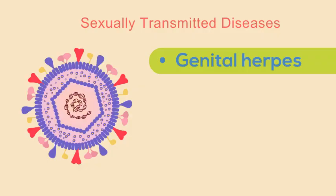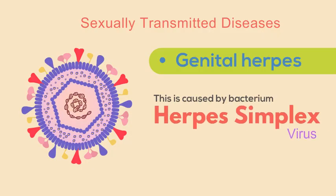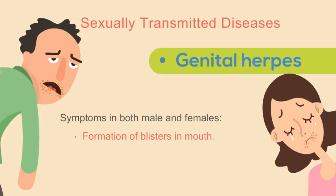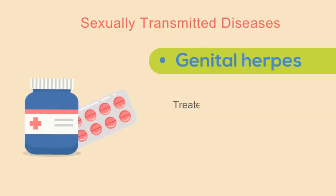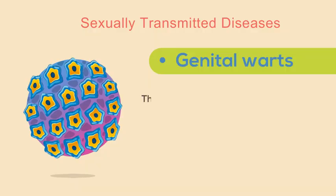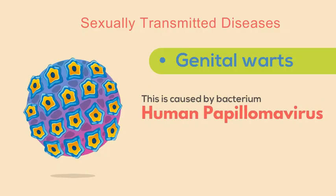The fifth disease is genital herpes, caused by the herpes simplex virus. Symptoms in both males and females include formation of blisters in the mouth, lips, and over the face, and high fever may occur. The disease is treated by penicillin.